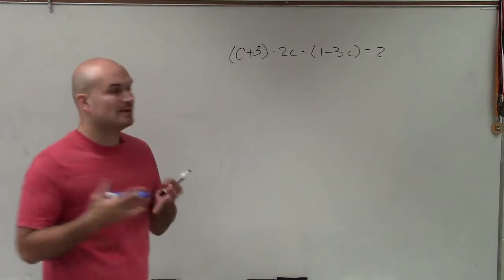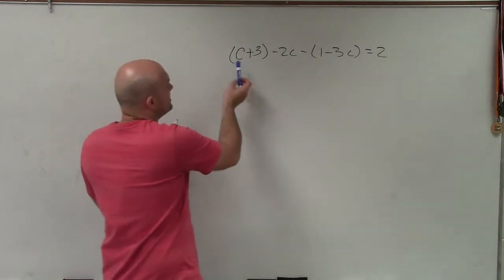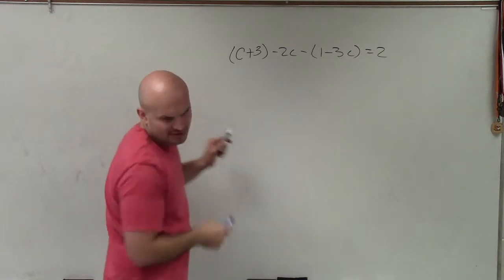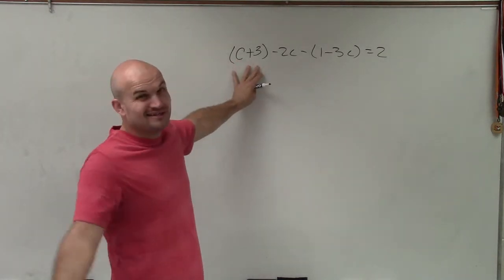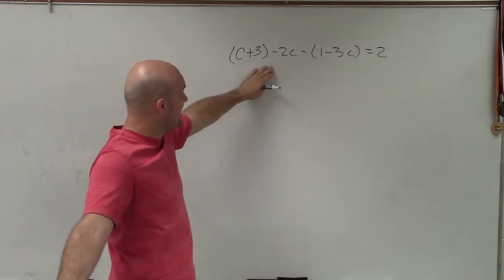To get rid of the parentheses we got to make sure we apply the distributive property. I don't think I need a reason for the parentheses here because you can see it's c plus 3 but really there's nothing multiplying by it so I can just kind of eliminate that.